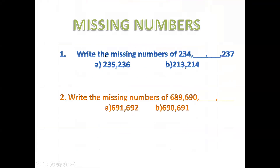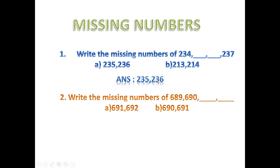Write the missing numbers. This is 234, 237. Here and here we have to put two numbers. You have to count: 234, 235, 236, 237. So the answer is 235, 236.